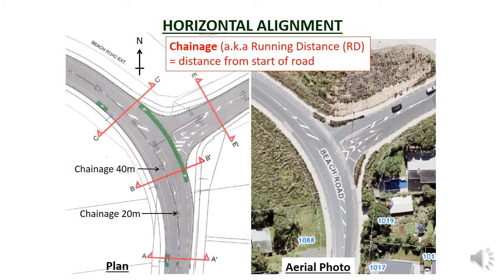The diagram to the left shows a plan of the road while a photo to the right shows it as it was constructed. Note the plans are produced before construction and are used to do the construction. But in this video we are using the drawings of a road that has already been constructed so I can show you what is actually built. Note the plan and the actual photo are almost exactly the same as you would expect.